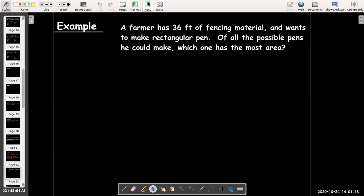So, let's look at an example. A farmer has 36 feet of fencing material and wants to make a rectangular pen. Of all the possible pens he could make, which one has the most area? So, we see this keyword, most area.